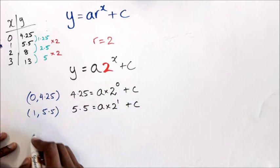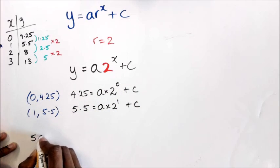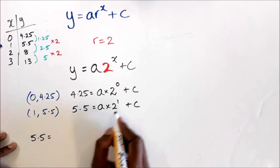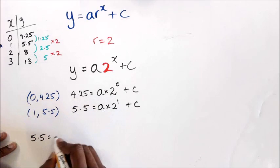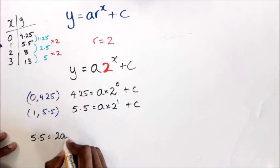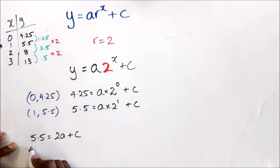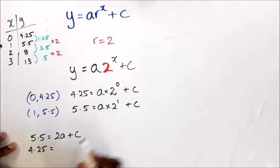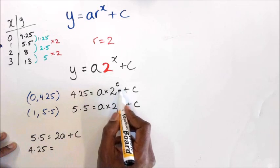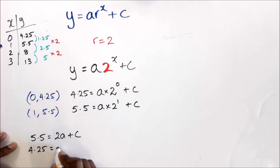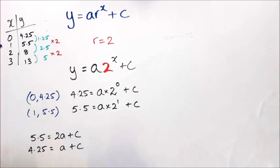The first equation is 5.5 equals 2 to the power of 1 times a, giving 2a plus c. My second equation is 4.25 equals 2 to the power of 0, which is 1, times a — so 1a — plus c.